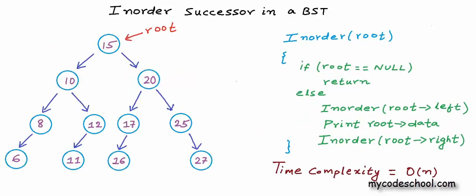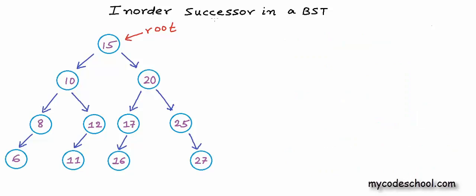I have drawn a binary search tree of integers here. A binary search tree, as we know, is a binary tree in which for each node, values of nodes in left are lesser and values of nodes in right are greater. Let's quickly see what will be the inorder traversal for this binary search tree. We'll start at the root of the tree. For any node, we first need to visit all nodes in its left, and then only we can visit that node. So we will have to go left — basically make a recursive call to go to the left child.